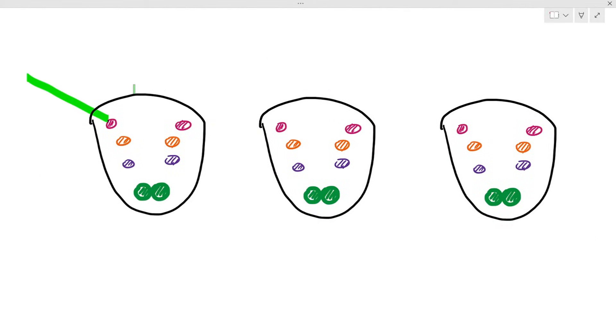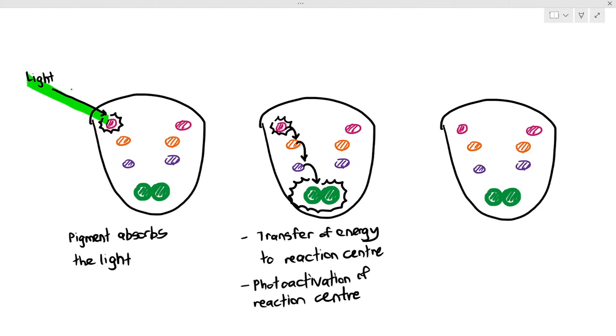In a nutshell, what the photosystems do is they will first absorb different wavelengths of light, transfer the energy to the reaction center, which will cause something called the photo activation of the reaction center, and an electron is released from the reaction center.